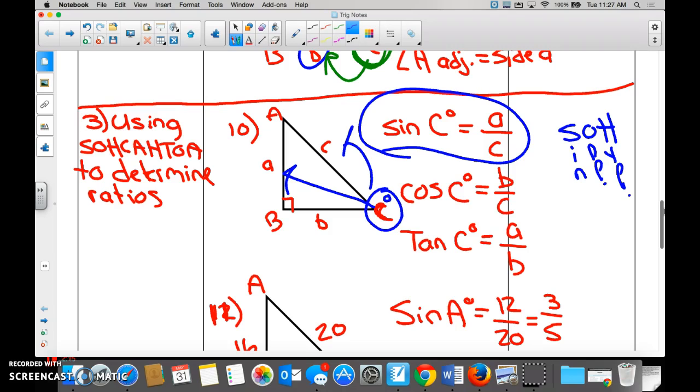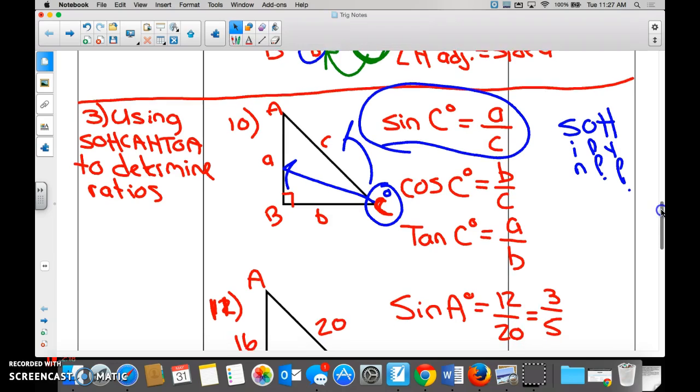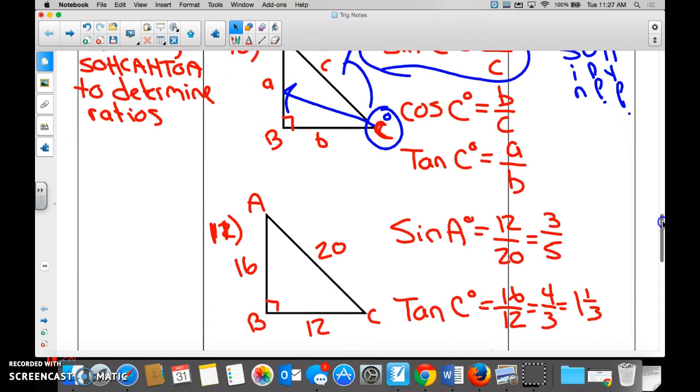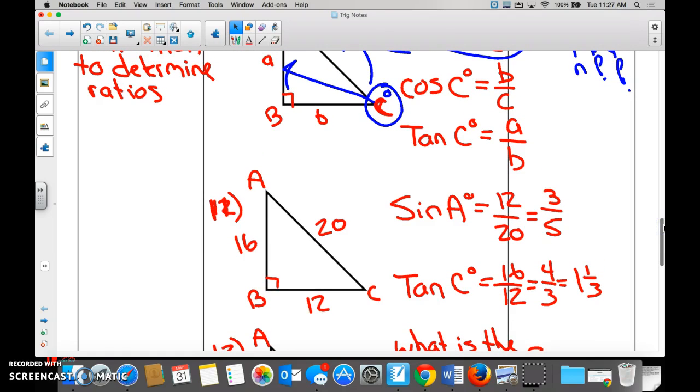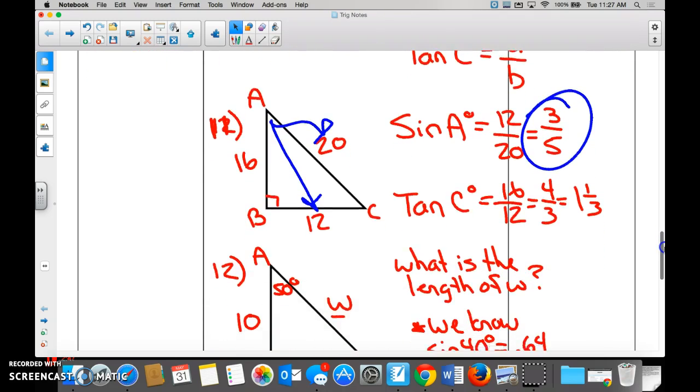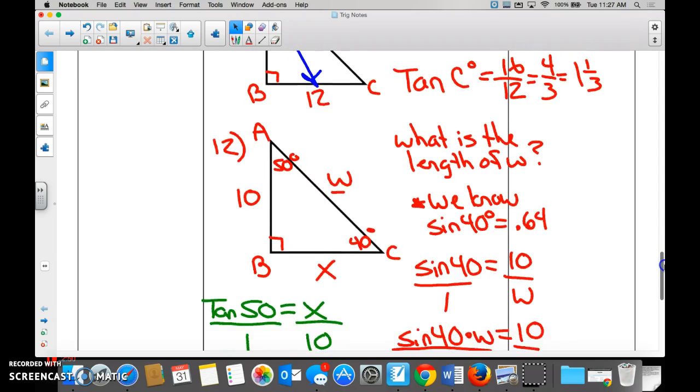We did a couple more. Cosine of C, tangent of C. I'm going to skip over that. Here is where we got into the real deal, sort of. Number 11. I asked you what is the sine of A? Sine of A would be 12. Sine would be opposite over hypotenuse. So we've got 12 over 20. The ratio for A would be 3 over 5. Right? Okay, 20 over 5.6, so whatever that equates to. We're not going to work on going that way.